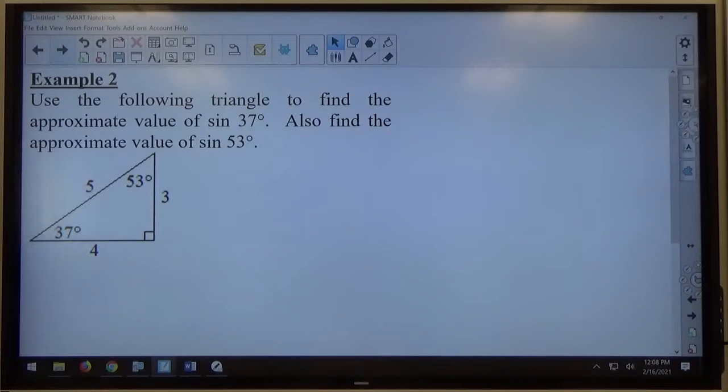If we take a look at example two, we'll notice this triangle is a 3-4-5 right triangle. And they've given us these angle measures of 37 degrees and 53 degrees.